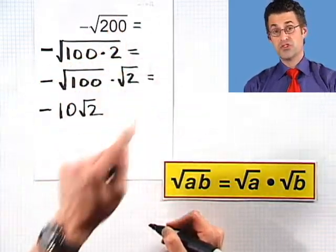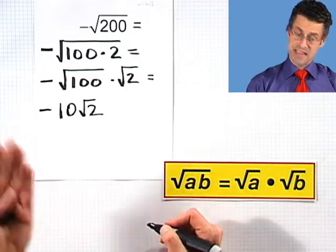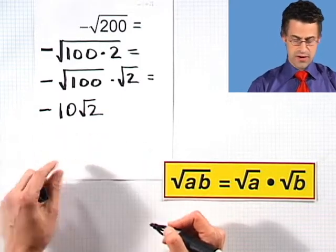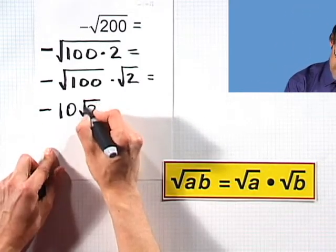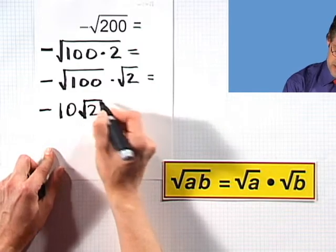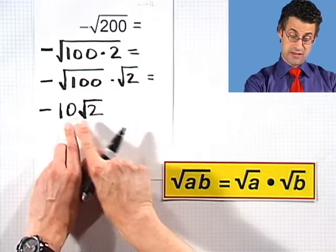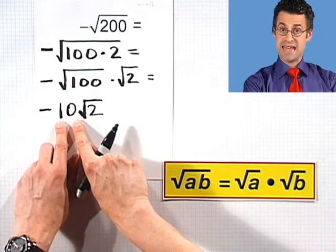So negative square root of 200 actually is the exact same thing as negative 10 square root of 2. And somehow in my mind, I think this is a little bit more friendly. Certainly you can see the square root part has shrunken quite a bit at the expense of having this multiplication by 10 out in front. So neat. So there's a great application of this particular property.